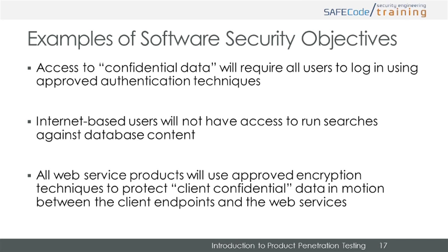Let's dig into the ramifications of these sample security objectives. First, access to confidential data will require all users to log in using approved authentication techniques. A tester would not be concerned about getting access to data not deemed confidential; one measure of success would be to find a way to access confidential data without being authenticated. Next, internet-based users will not have access to run database searches. A tester would not be concerned if internal users did have access to run searches; a measure of success would be to identify ways of querying the database via internet access.